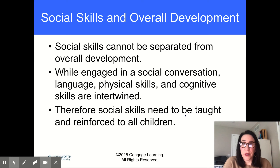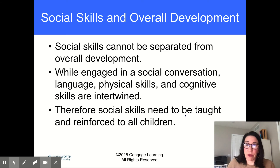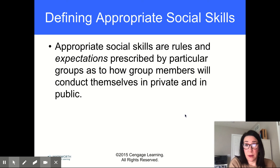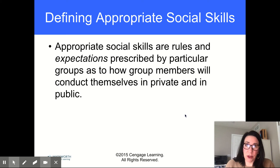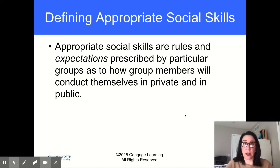Social skills are part of overall development. When you are engaging with someone socially, you are conversing with them, looking at them, thinking about what's happening — all of these skills are needed in that social interaction. We need to make sure that kids have these things, because as they go through their life, they're going to need to be able to engage with other people in an appropriate way. Appropriate social skills are rules and expectations prescribed by particular groups as to how group members will conduct themselves in private and in public — the ways we want to engage appropriately with other children, with adults, with teachers. Because those skills they learn at school are things that will translate to the rest of their world.